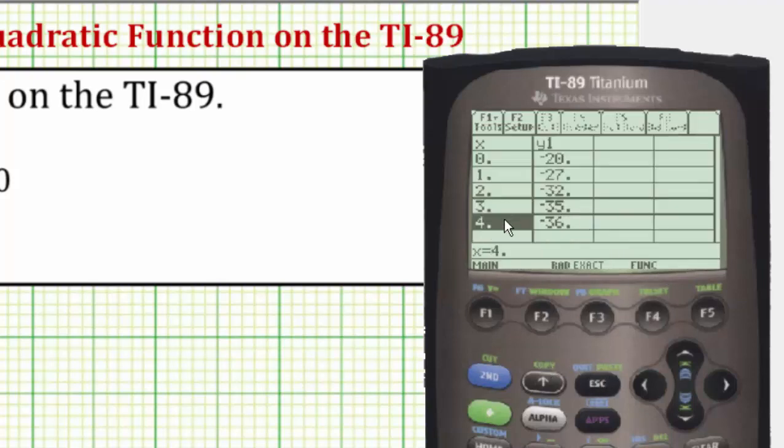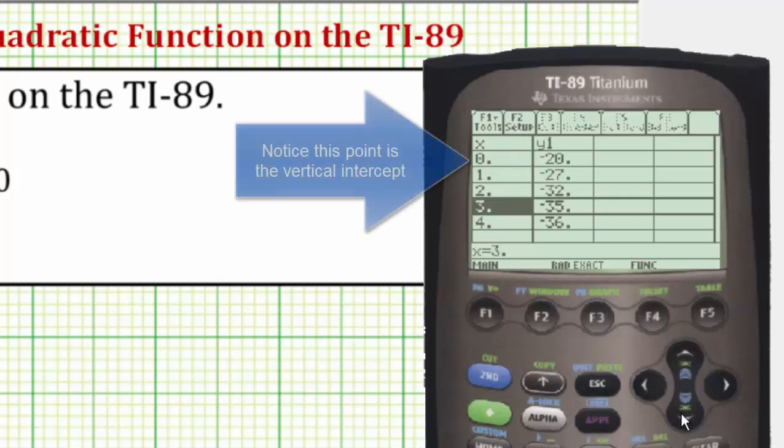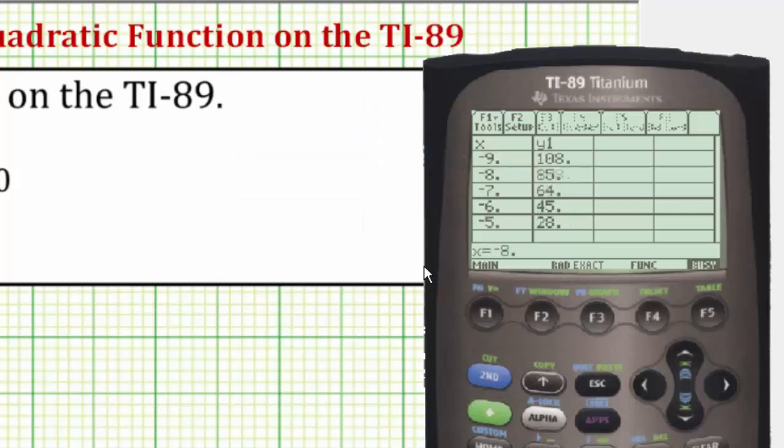Now we're back to the table. If we scroll up or down, we can select any points we wish that would be convenient to graph by hand. All these points in the table are on the graph of the parabola.